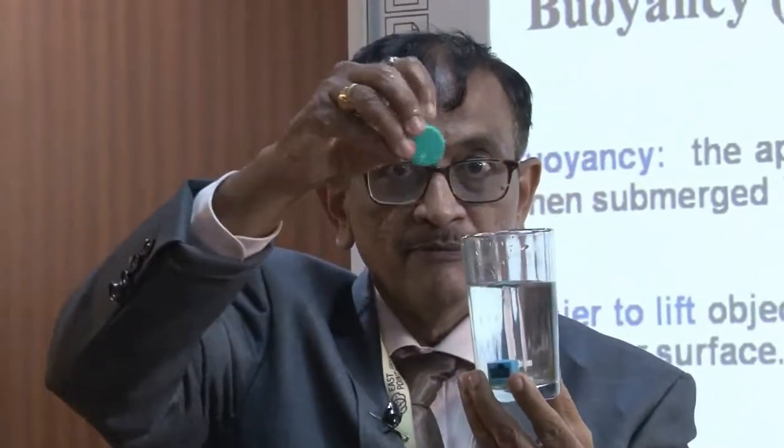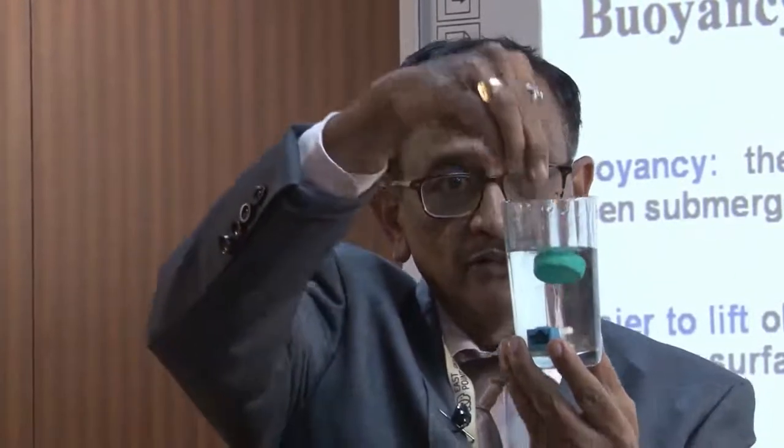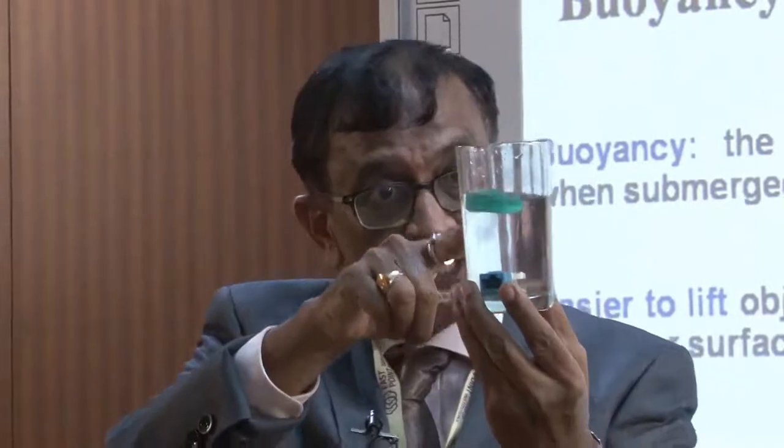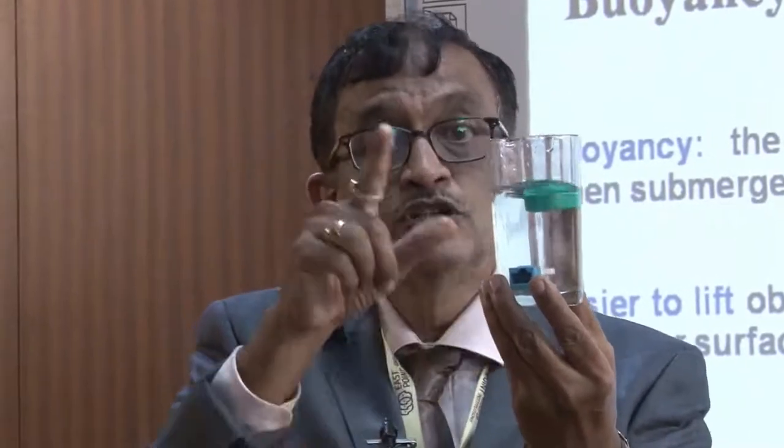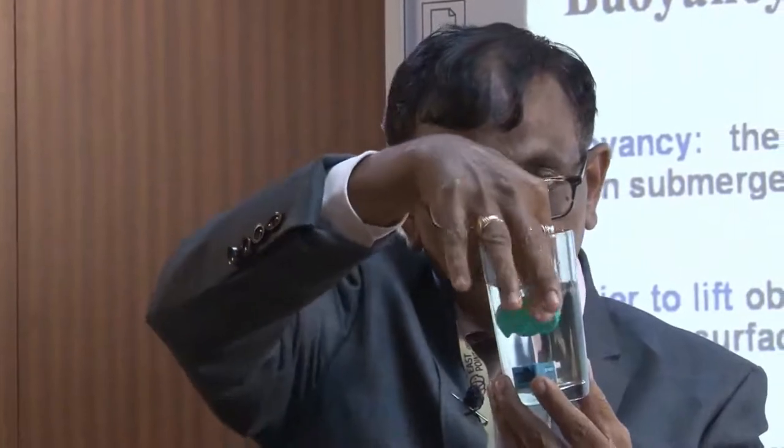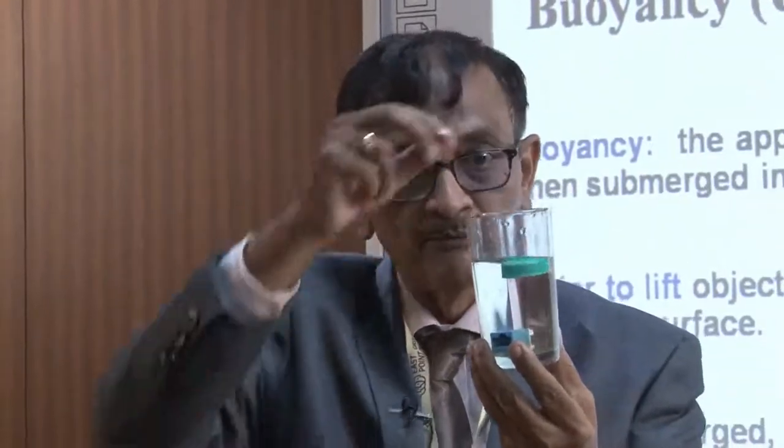Now, interestingly, suppose I take the same cap floating in one orientation, then I change it to a different orientation. It has gone slightly inside — it is not fully floating now. It is fully submerged but not fully gone down. It is coming to one particular place and hanging there — this is called neutral equilibrium. It is fully under water but under neutral equilibrium.